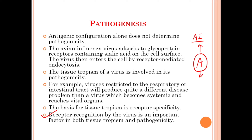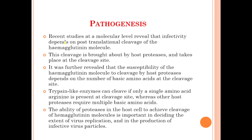Tissue tropism depends on receptor specificity — if a virus cannot recognize a particular receptor in a particular bird, it will not be able to set up the infection. Therefore, receptor recognition plays a very important role in tissue tropism and pathogenicity, and in the development of disease in a particular bird. Recent studies at the molecular level reveal that infectivity depends upon the post-translational cleavage of the hemagglutinin molecule.